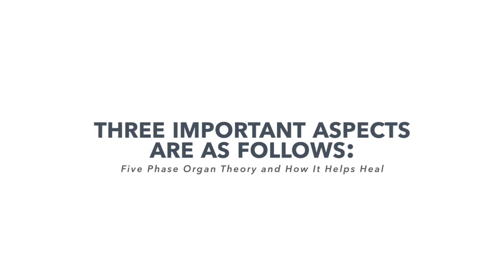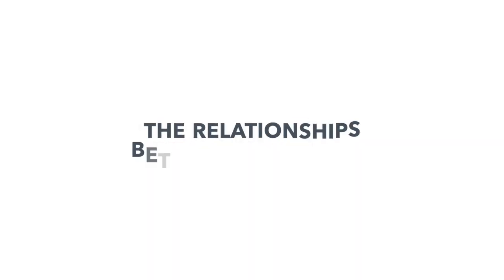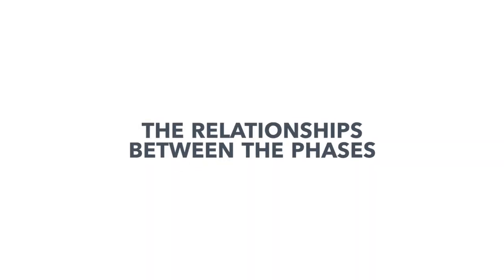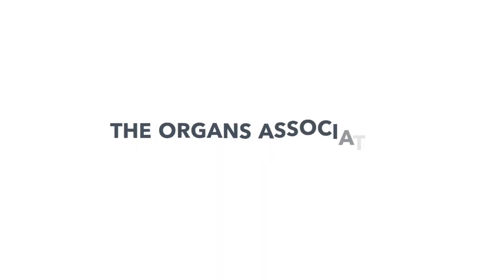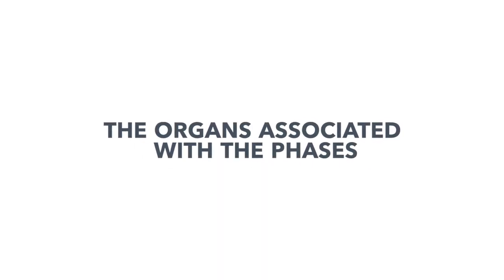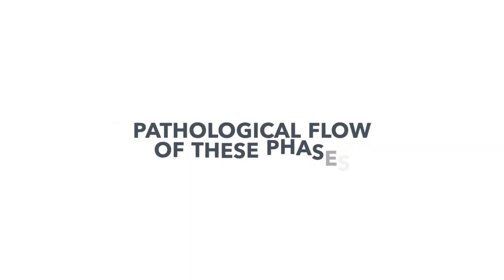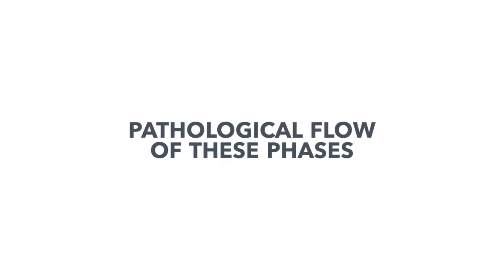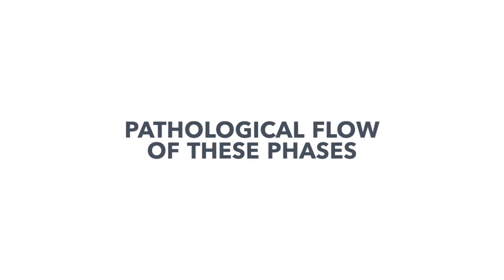There are three really important aspects of this five phases concept to understand. The first is to understand the relationships between the phases. The second is to understand that there are organs associated with the phases and therefore pathology. The third is to understand the pathological flow of these phases. Let's jump into an example because it'll be really interesting that way.